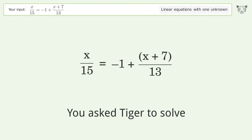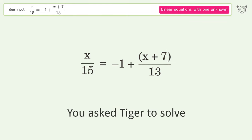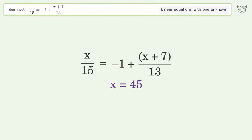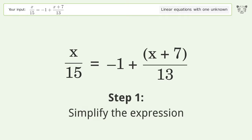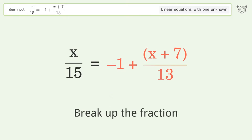You ask Tiger to solve this. This deals with linear equations with one unknown. The final result is x equals 45. Let's solve it step by step. Simplify the expression. Break up the fraction.